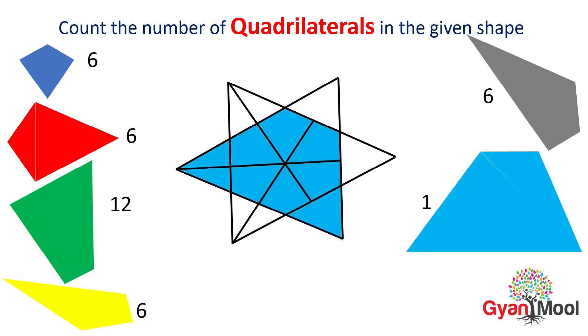After this we will count the congruent quadrilaterals to this sky blue quadrilateral. These are 1, 2, 3, 4, 5 and 6.